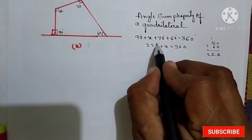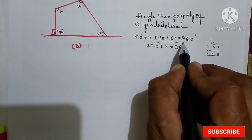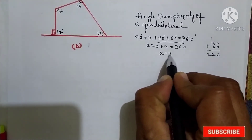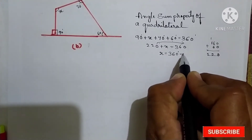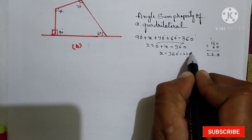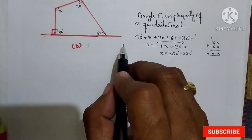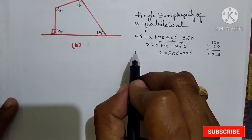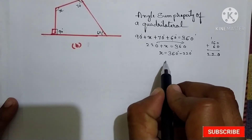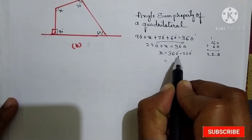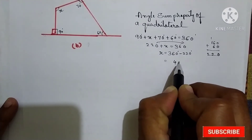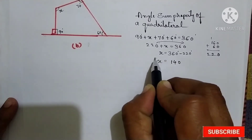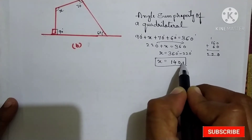Next, take 220 degrees to the RHS side. So x is equal to 360 degrees minus 220 degrees. Now subtract: 0 minus 0 is 0, 6 minus 2 is 4, 3 minus 2 is 1. So 140 degrees — that means here x is equal to 140.